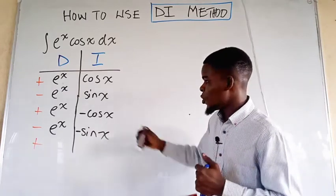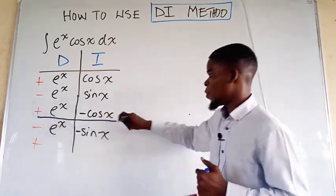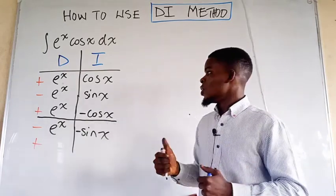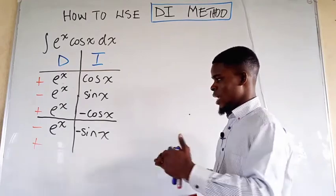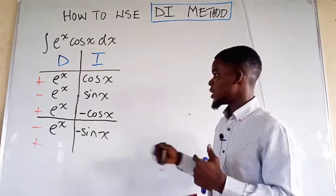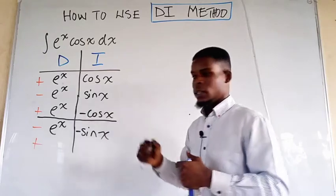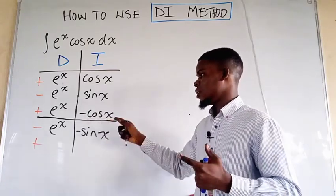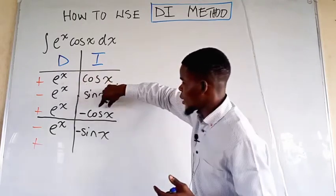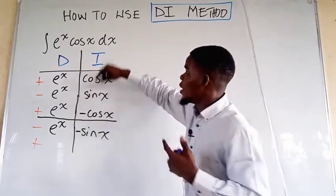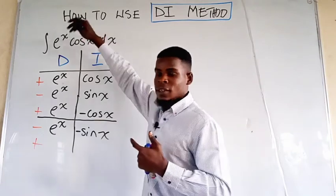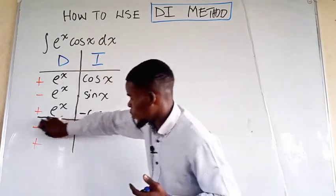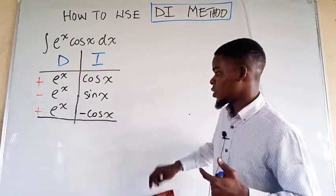So at this point you just have to stop here, where the function pattern repeats, and you don't continue further. You do not continue until any one of them reduces, because none of them will reduce. You actually end where the function pattern repeats. It does not matter the constant — provided it is e to the power of x and cosine of x that you have at this point. Then you just stop there and multiply the diagonals and integrate the product of the last row.